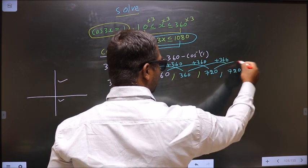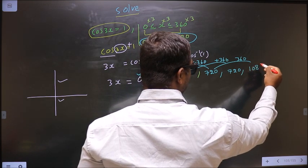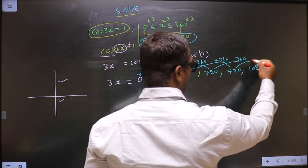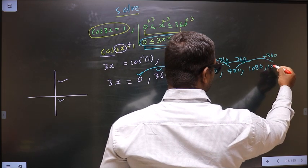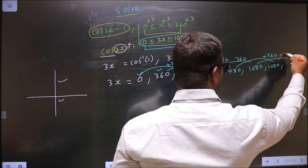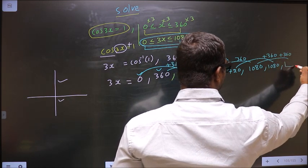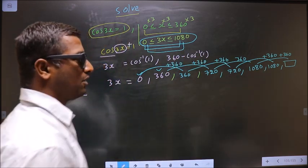To get another angle add 360 to this. So I get 1080. To get another angle add 360 to this. So I get 1080. To get another angle add 360 to this. Angle here will not lie in this interval. So that is where we stop.